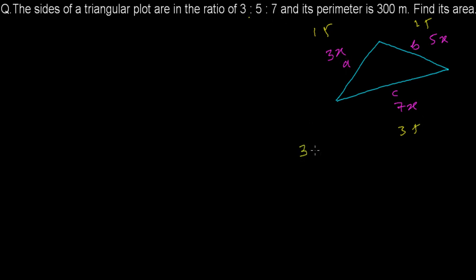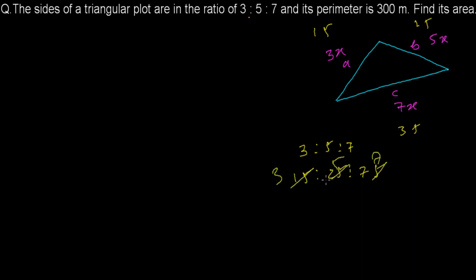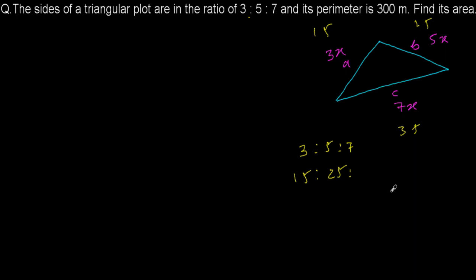You can check: 15:25:35 gives the same ratio. When you divide each by 5, you get 3:5:7 again. It could also be 21:35:49 — anything. The point is we don't know the exact measurement, so that's why we multiply by a variable x.